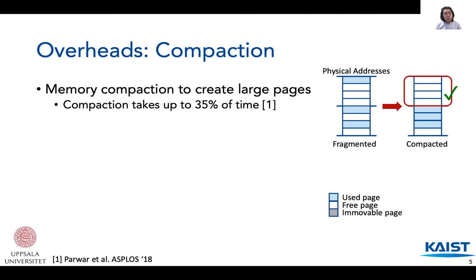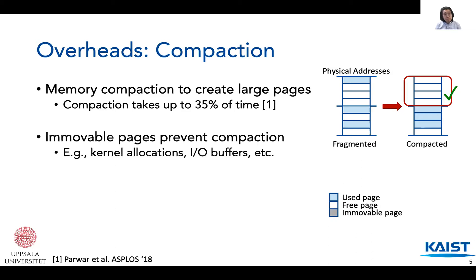Such memory compaction can be costly and has been found to consume up to 35% of execution time. Immovable pages make compaction even harder. Immovable pages come from kernel allocations, IO buffers, and page caches. A kernel compilation generates lots of page caches, generating lots of immovable pages.